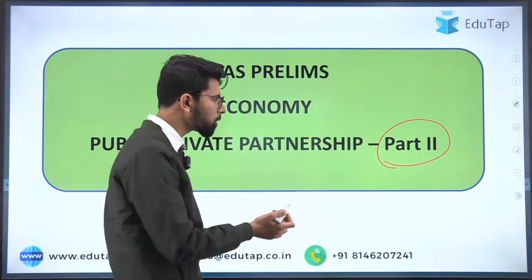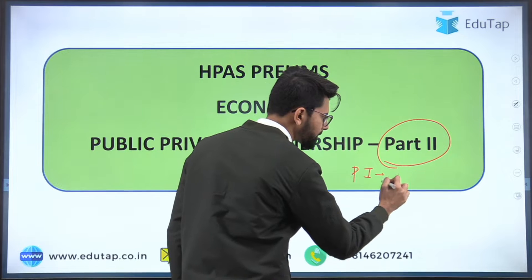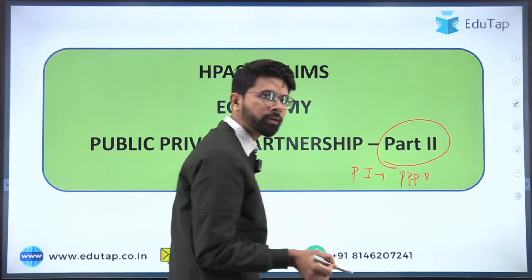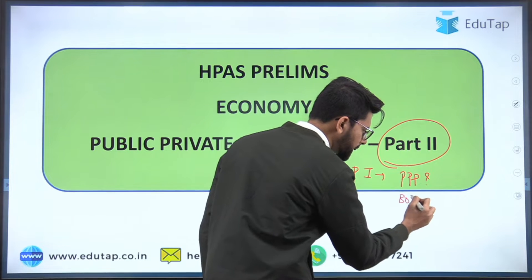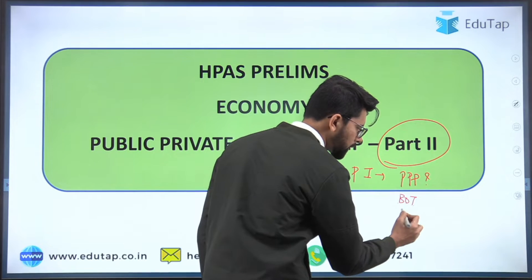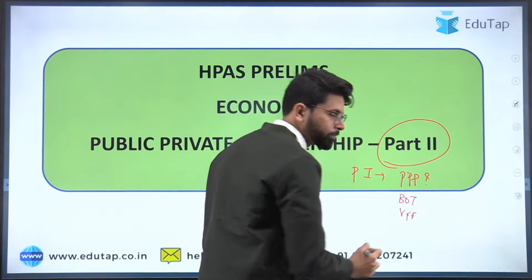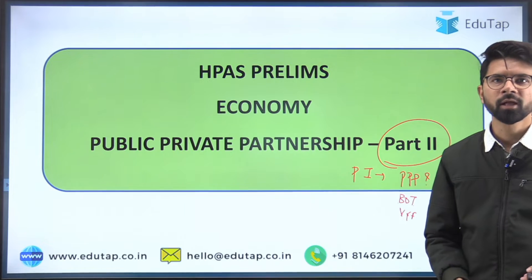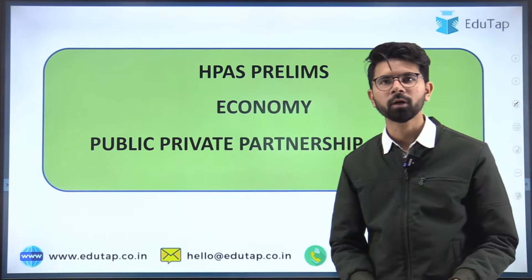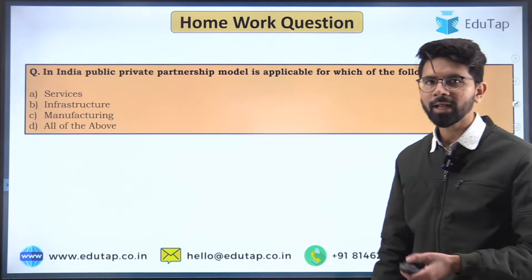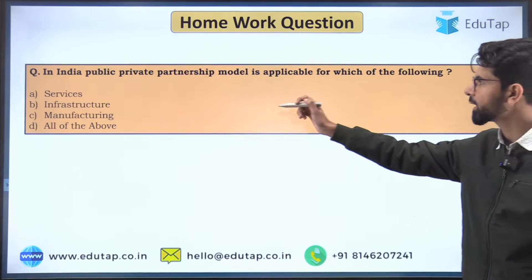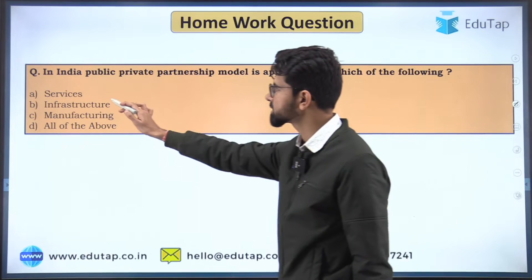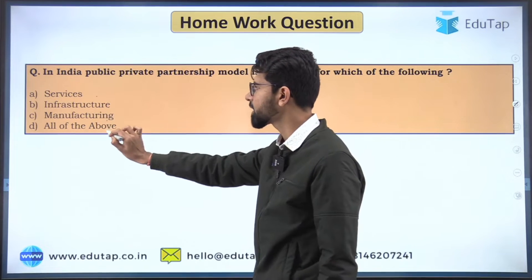To give a quick recap of what we covered in Part 1: we understood what Triple P models are, why there is a need for them, and then we understood one model — the BOT — and after that we understood viability gap funding. Now let's proceed ahead to understand different models. One is the hybrid annuity model and the other is the Swiss challenger model.